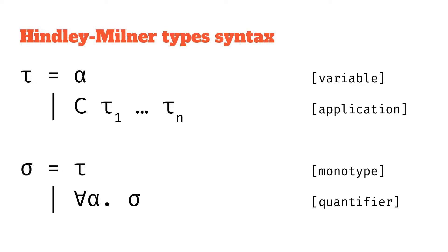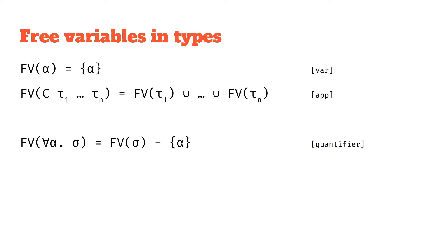We then looked at Hindley-Milner types: monotypes represented by tau, and polytypes represented by sigma. If you don't remember these things, have a look at the previous videos. You might think — if we can define what a free variable is in a lambda expression, can we do that for a Hindley-Milner type? And we can. We'll see why it's useful later, but for now we're just going to learn how we determine what is a free variable.